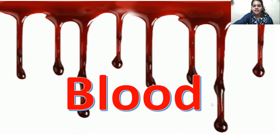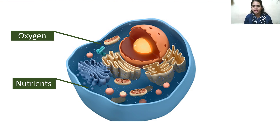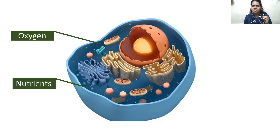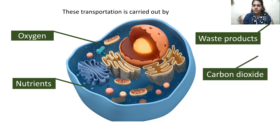Our body is made up of cells, tissues, organs and organ systems. These cells, tissues, organs and organ systems require certain products so that they can function at the optimum level. These products are oxygen and nutrients, which are required by each and every cell of our body. But there are also certain products formed inside the cell that have to be eliminated — those are waste products and carbon dioxide. This transportation is carried out by a fluid present in our body, and that is called blood.